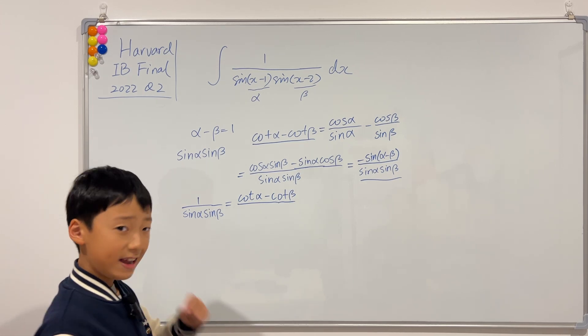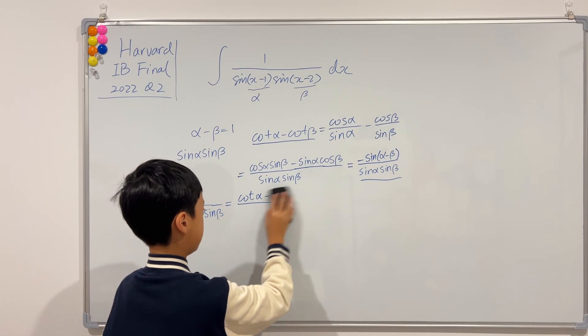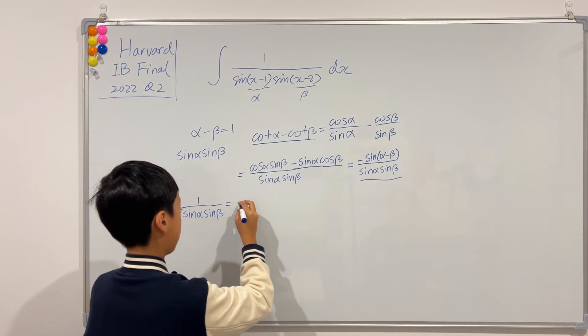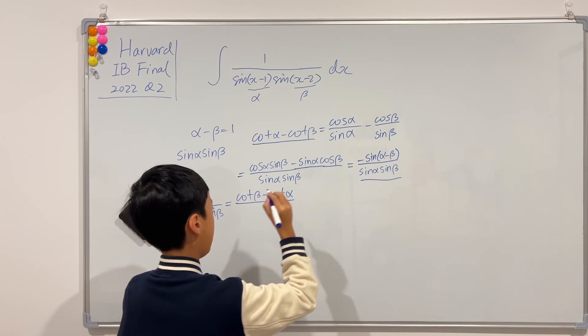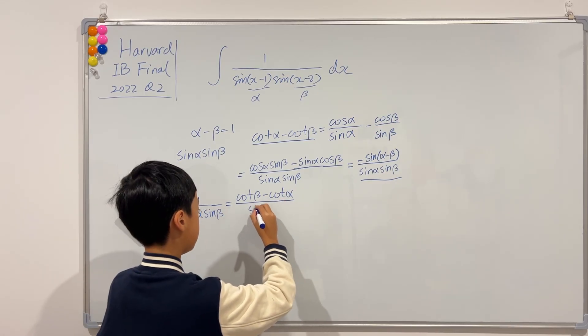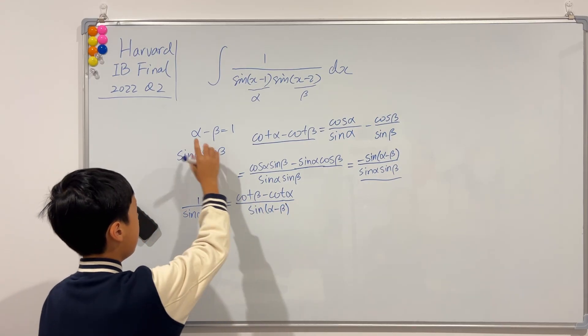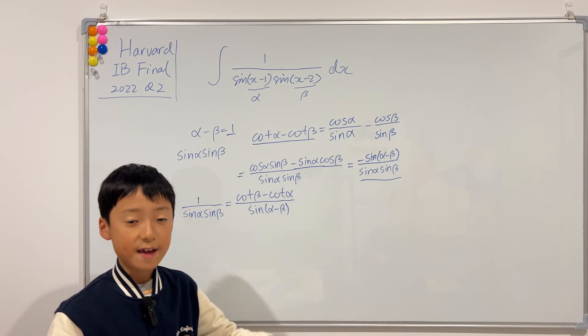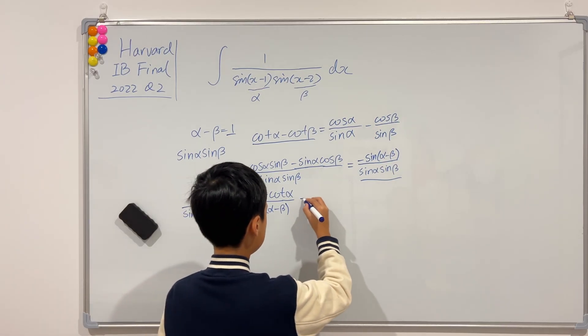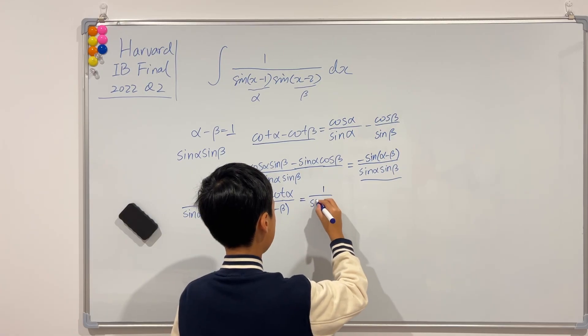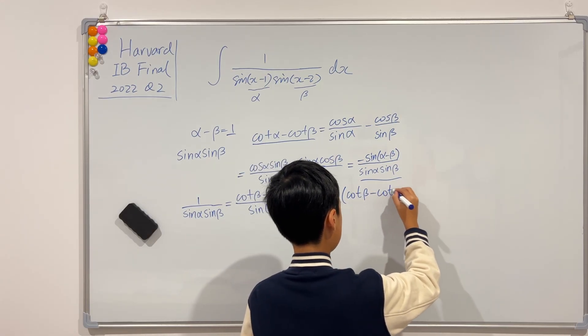We don't like negative, right? But, we can actually use this negative here to swap the order of subtraction. So, I will just erase this. Then, we'll get cotangent of beta minus cotangent of alpha. And the bottom is, of course, not negative, but positive sine alpha minus beta. And we know alpha minus beta is 1. So, this is just sine of 1. And what is sine of 1? A constant. And what is 1 over sine of 1? A constant. So, this is just equal to 1 over sine of 1 times cotangent of beta minus cotangent of alpha.